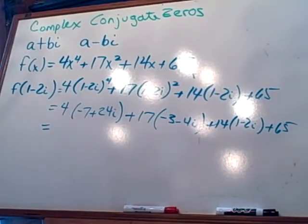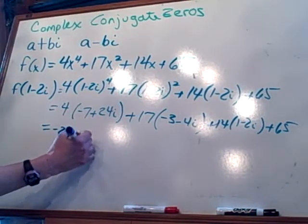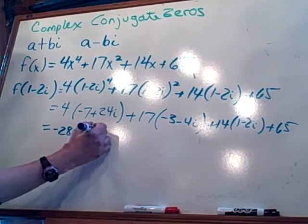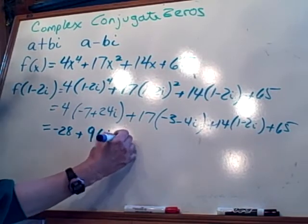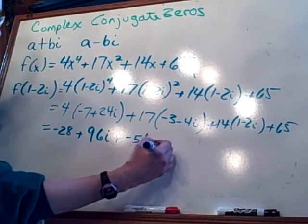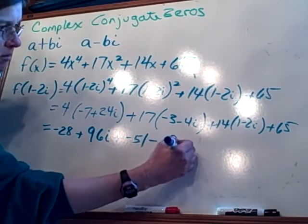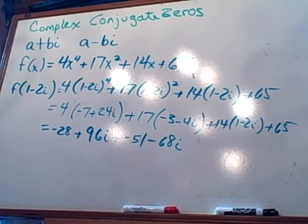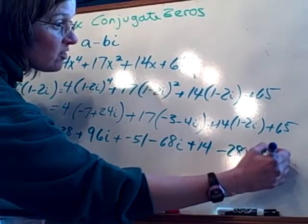On the next step we're going to go ahead and distribute. So four times negative 7 is negative 28, plus 4 times 24 — that's 96i. Plus 17 times negative 3 is negative 51, and 17 times negative 4i is negative 68i. Plus 14 minus 28i, plus 65.